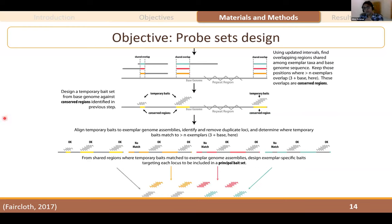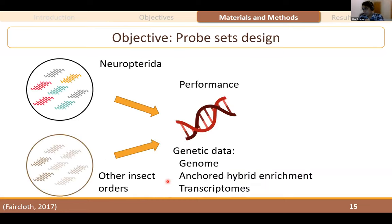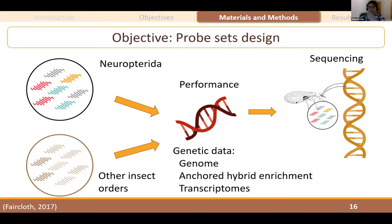After that, we highlight the shared overlapping regions so we can identify the UCE sequences we want to target. Using these marked regions, we design temporary matching probes that we then compare with the other genome sequences to create the final probe sets. After designing the probe set, I will check the performance of these newly designed probes compared to available probes for other insect orders, to see if the ones I created will have better performance targeting UCEs of lacewings. Then I will use these probes to target UCEs of lacewings, use them for sequencing, and reconstruct the phylogenetic tree.